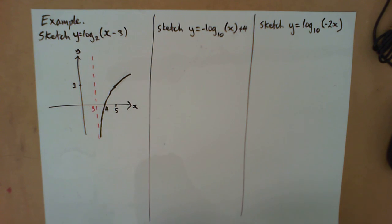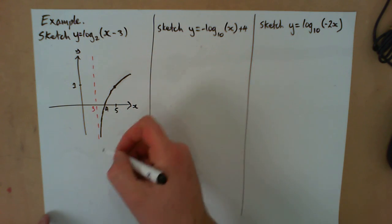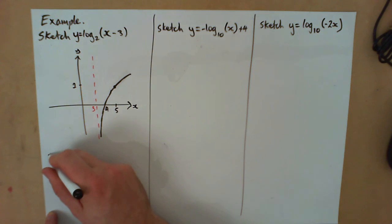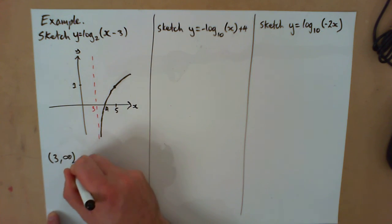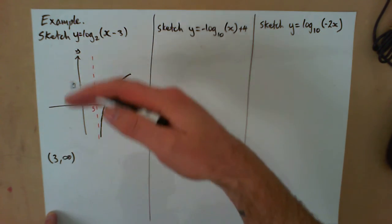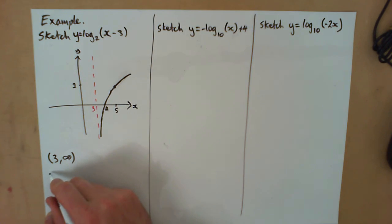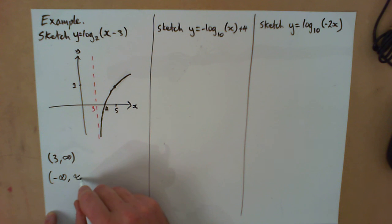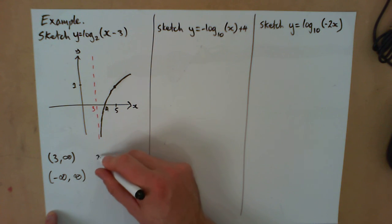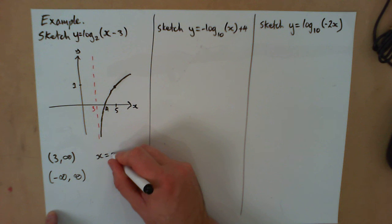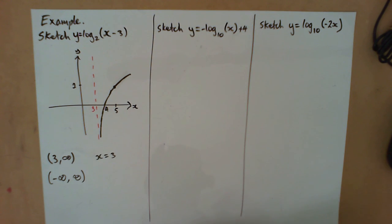For completeness — since many textbook questions ask for domain and range — for this graph: our domain is from 3 to infinity, because the graph has moved to the right. The range doesn't change with vertical shifts, so it's still from negative infinity to infinity. We also have the vertical asymptote at x equals 3.